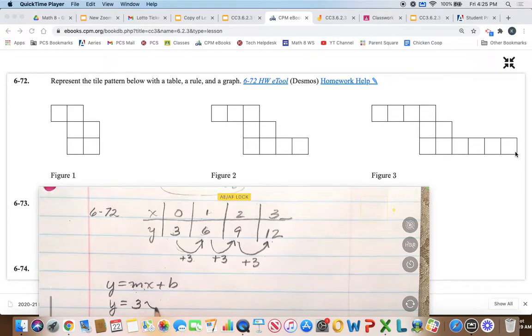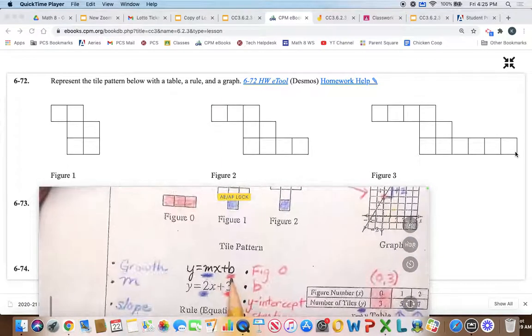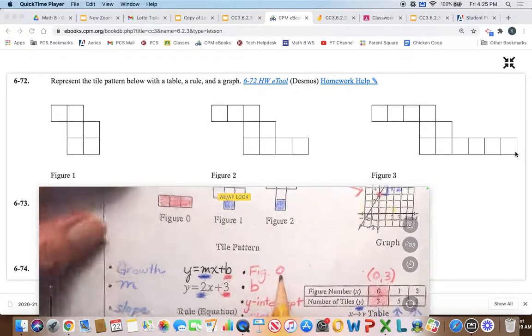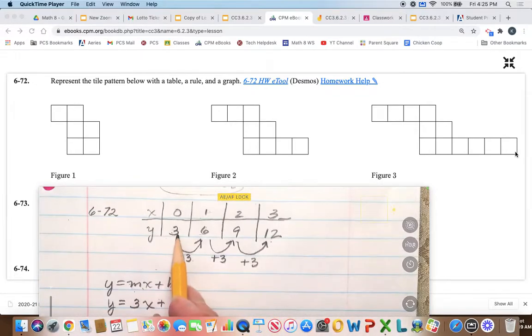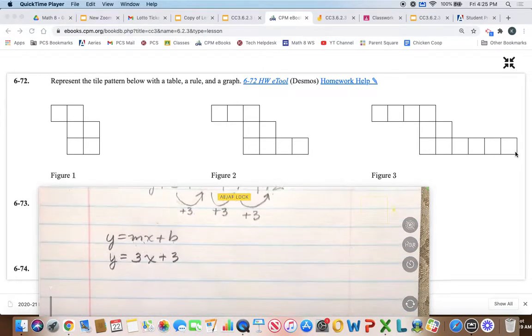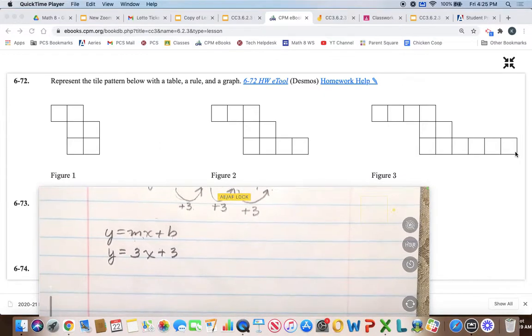And then we need to find b, and we know that b is always figure zero, so if we go and see what figure zero is, it's three, so now we have the rule. Okay, and the last thing that we'll want to do is create the graph.